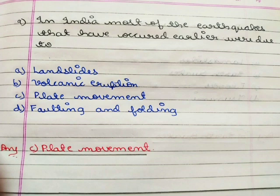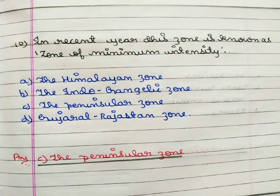Next question: in India, most of the earthquakes that have occurred were due to option A landslides, option B volcanic eruption, option C plate movement, option D faulting and folding. The correct answer is option C plate movement.